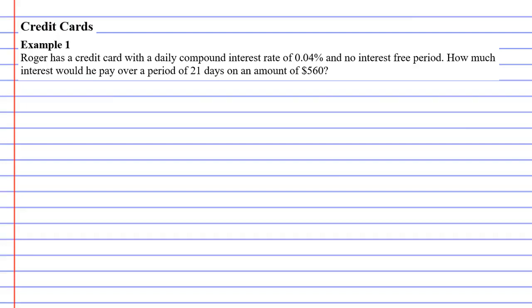In this video we're going to complete example one on credit cards. It says here that Roger has a credit card with a daily compound interest rate of 0.04%.